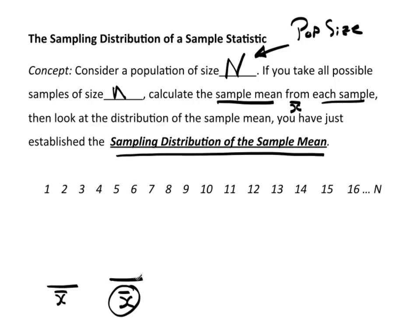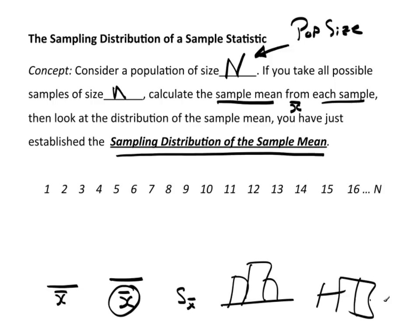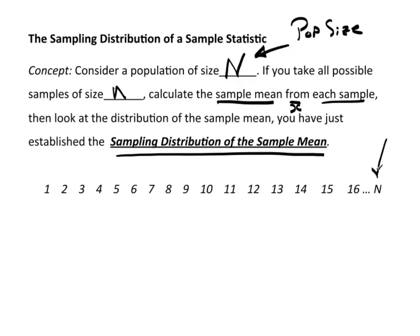So you'd find the average of the averages, the standard deviation of the averages, you'd still look at histograms and box plots — you do the exact same thing. The only difference is that rather than these numbers being individual values x's, each value is actually a result of a sample, so each x is actually an x-bar.